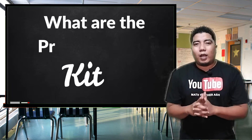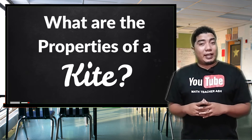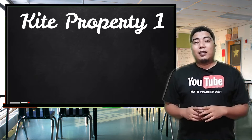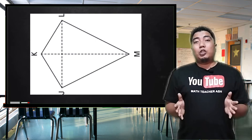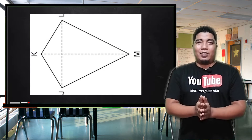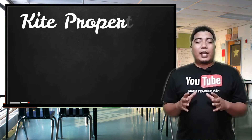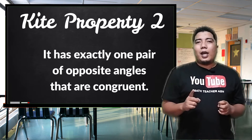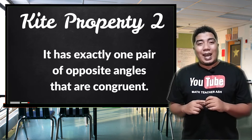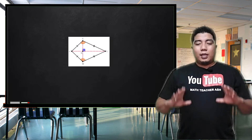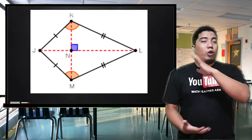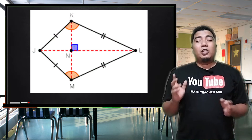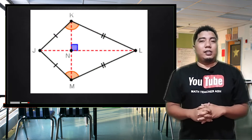The next question is: what are the properties of a kite? The first property is that the diagonals of the kite are perpendicular — meaning the diagonals form a 90-degree angle. The second property is that a kite has exactly one pair of opposite angles that are congruent. There is only one pair of congruent angles.